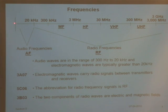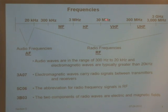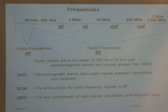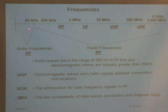This is a chart that starts at 0 hertz and goes up: here's 300 kilohertz, 3 megahertz, 30 megahertz, 300 megahertz, 3,000 megahertz which is 3 gigahertz. So this is just frequency getting higher and higher. There's a range down here from 0 to 20 kilohertz which they call audio frequencies, and from about 20 kilohertz up it's called radio frequencies.